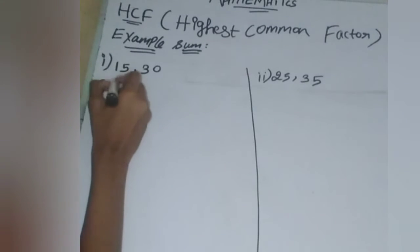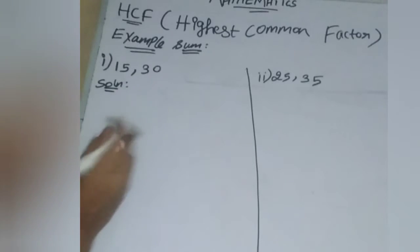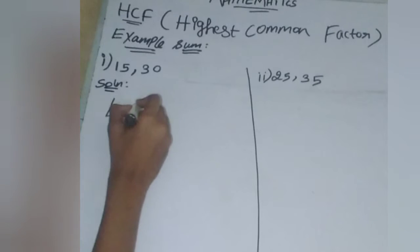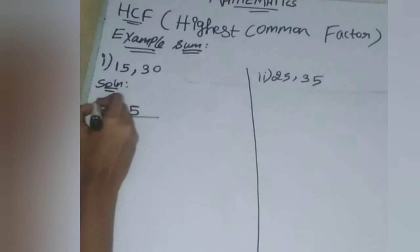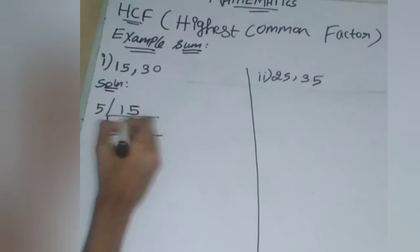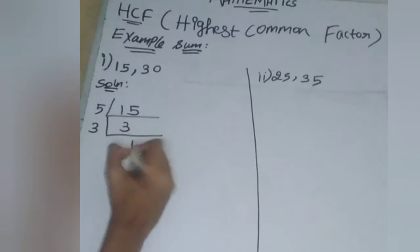HCF is the highest common factor. Let's start with 15. From the 5 times table, 5 times 3 equals 15. From the 3 times table, 3 times 1 equals 3.